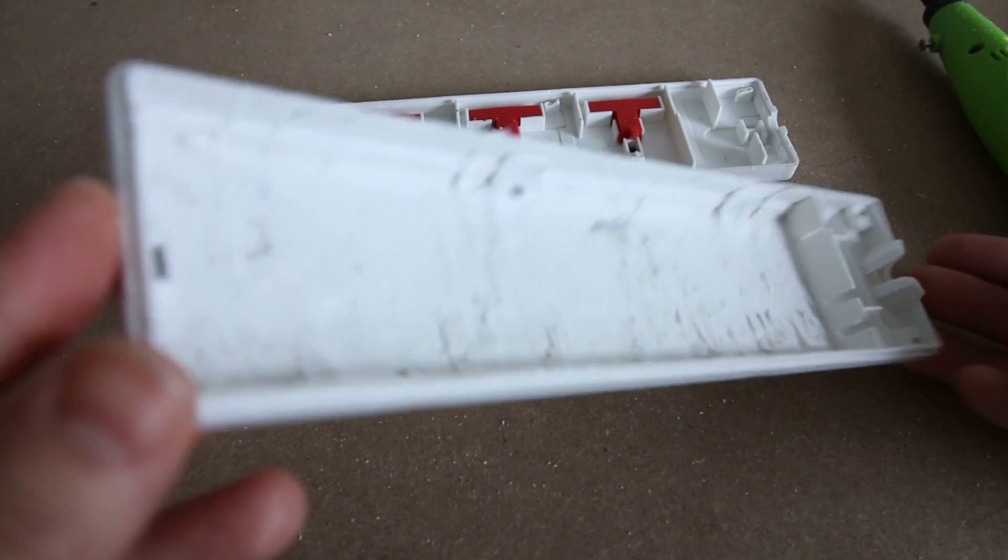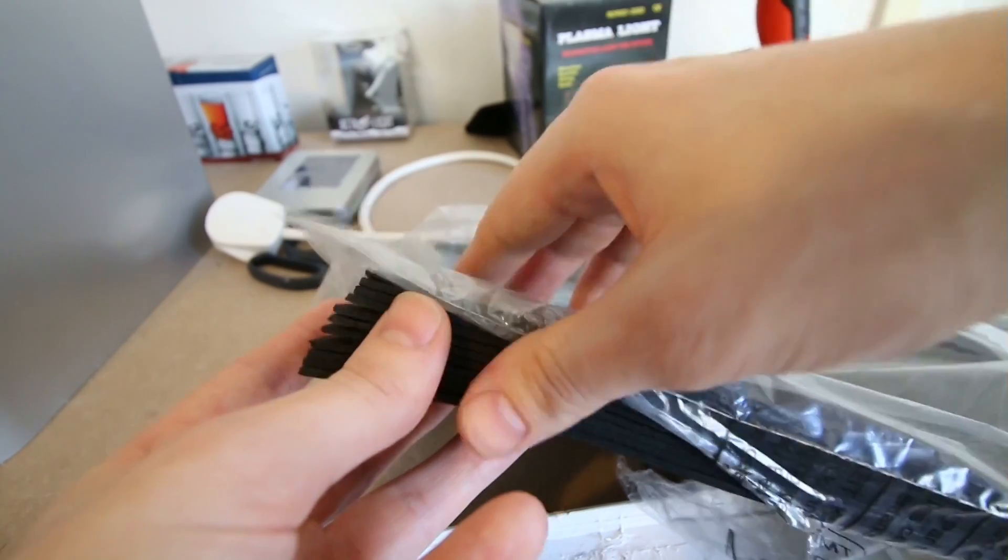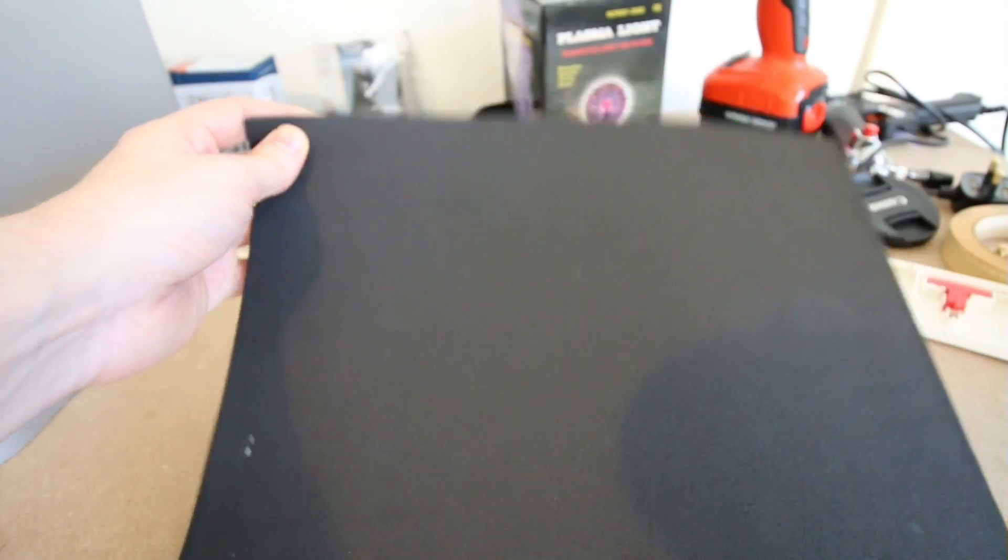Once the inside was hollowed out I decided to add some protective foam. Now I purchased some of these 2mm thick foam sheets online, but I'm sure you could probably find something similar around the house.